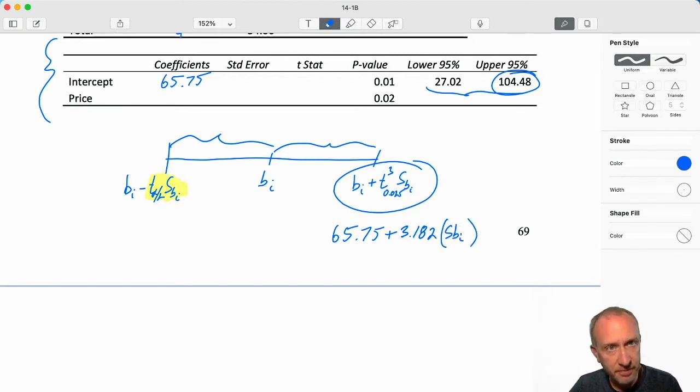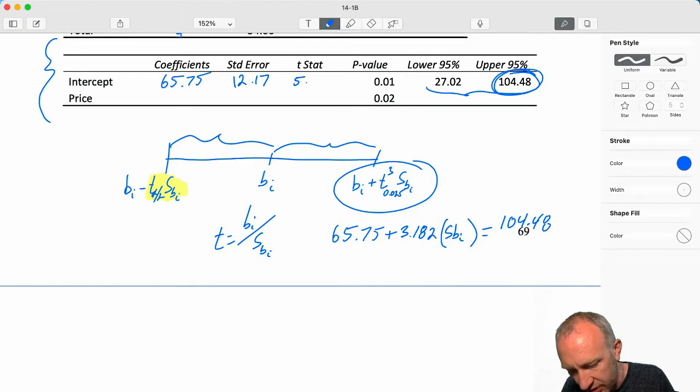3.182 multiplied by that standard error equals, well, this is that upper limit, equals 104.48. So now I just have to rearrange this, and I can solve for that standard error. So 104.48 minus 65.75 divided by 3.182, that gives me my standard error, 12.17. And now I can get my t statistic, because that t statistic is the coefficient divided by that standard error. So 65.75 divided by 12.17, and I have 5.4.